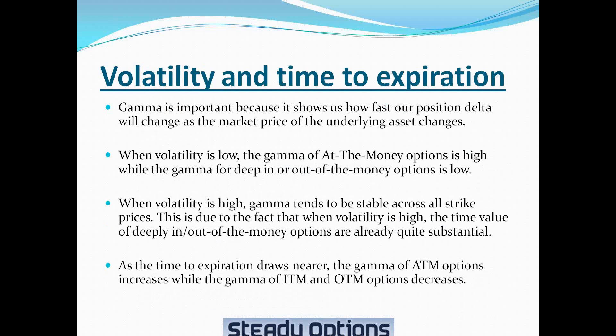As the time to expiration draws near, the gamma of at-the-money options increases, while the gamma of in-the-money and out-of-the-money options decreases.